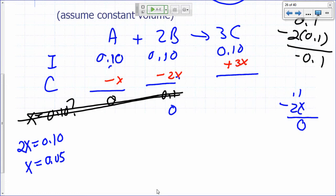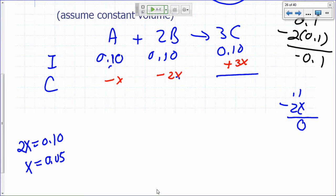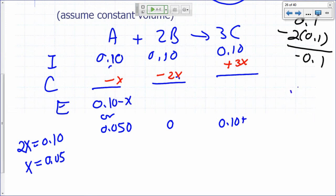So how much A would I have at equilibrium? This is going to be 0.10 minus x at equilibrium or 0.05. And this is going to be 0, and this is going to be 0.10 plus 3x. What's 0.10 plus 3x? What is 3x? 3 times 0.05. That's 0.15 plus 0.1. That's 0.25.